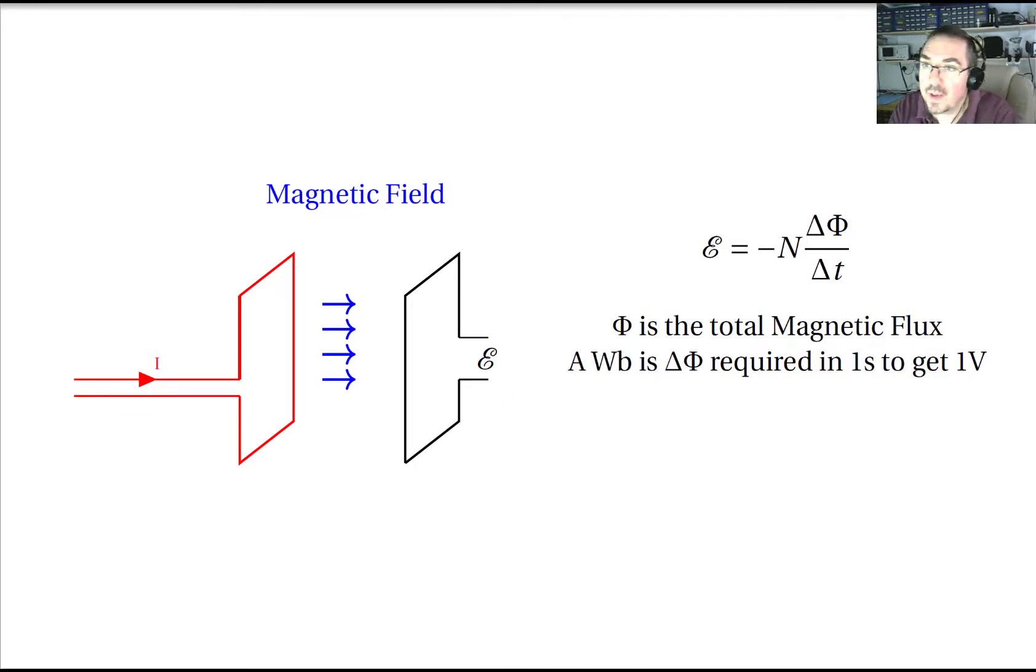And this really is where the concept of mutual inductance comes in because mutual inductance gives us a way to measure how much magnetic flux is coupled from the first circuit to the second circuit. Okay, so if we define mutual inductance as M, it's defined in terms of Webers per amp, so it's the total magnetic flux per unit current.